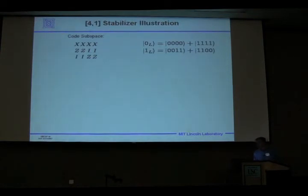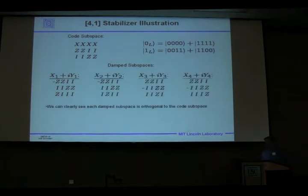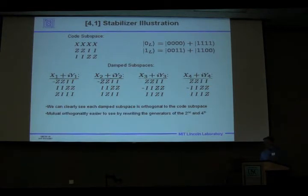What that means is that we can look at the same 4-1 code as a stabilizer code and understand what happens with the errors on each of these subspaces. So if we perform a damping on the first qubit, this stabilizer goes away, this one becomes negative, and this one stays the same, and then we add a Z on the first qubit. We can look at the same thing on the second, third, and fourth qubits, and we get these four subspaces. We can see that they're all orthogonal to the main subspace because we have a minus ZZII and a plus ZZII. We can also see pretty quickly that these are orthogonal to each other. And if we simply do a rewriting of the second and the fourth subspaces, we can see that all four of these are, in fact, mutually orthogonal.